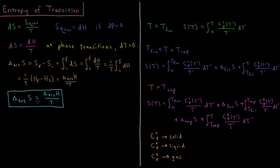This is the caveat I mentioned in the previous video: if we want the entropy of a system at a given temperature, we integrate from 0 up to that temperature of how the entropy changes over T. That is the case if we don't have a phase transition in the way, because then we have to account for the entropy of that phase transition. Here's how we do that.